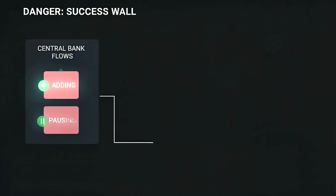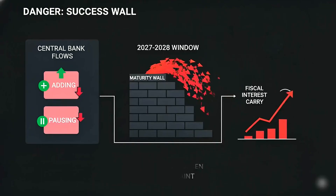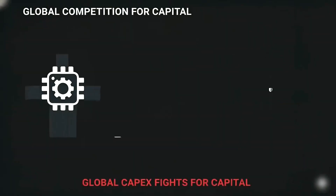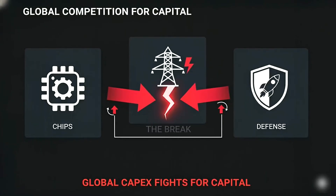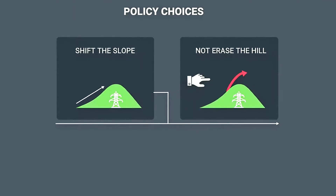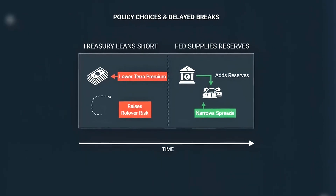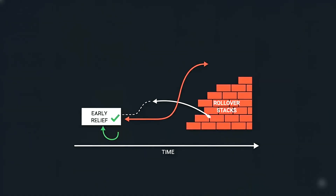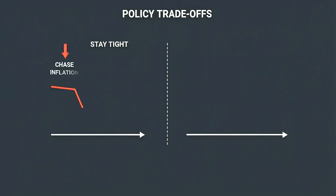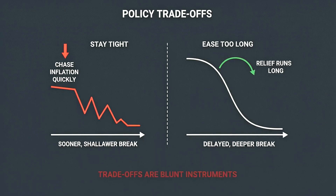Step back and place the 2027 to 2028 window. The maturity wall crests. Fiscal interest carry compounds. Global capex keeps competing for capital. The arithmetic nudges the economy toward a break sometime in that span. Timing is conditional, not fated. Policy choices can shift the slope but not erase the hill. If Treasury leans short and the Fed supplies reserves at stress points, the break can delay — but the cost shows up later as rollover stacks and inflation risk. If policymakers stay tight to chase target inflation quickly, the break can arrive sooner but maybe shallower. Trade-offs are blunt instruments.